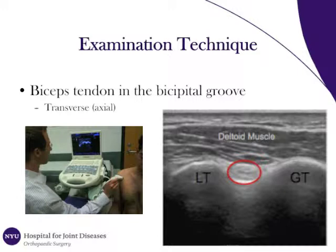To image the biceps tendon in the bicipital groove, the examiner is positioned anterior and lateral to the patient. The ultrasound unit is positioned in front of the physician so that it can easily be referenced during the examination. The patient is seated on a swivel stool and the arm is positioned at the side with the forearm in full supination. The exam begins with the probe at the location of the bicipital groove. In the image, LT is the lesser tuberosity, GT is the greater tuberosity, the biceps tendon is circled in red, and above is the deltoid muscle.